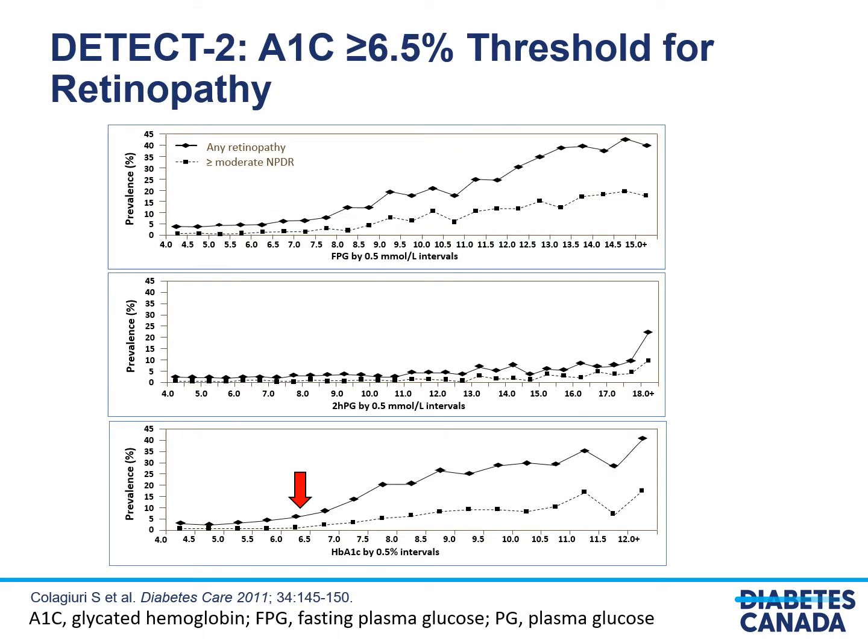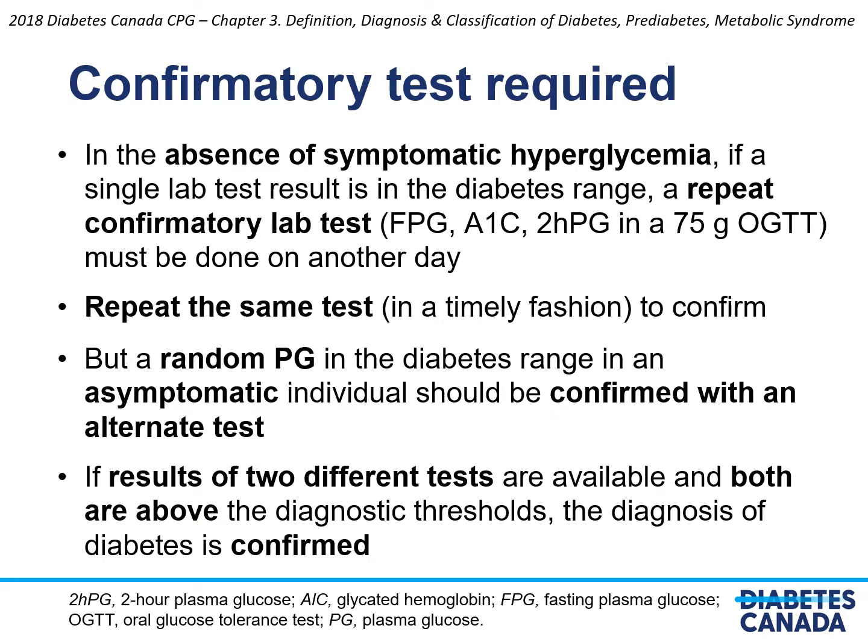The hemoglobin A1c criterion of 6.5 percent or more has been established more recently since the assay for hemoglobin A1c has been standardized across the world. Before committing an asymptomatic patient to a diagnosis of diabetes lifelong, it is important to confirm the diagnosis with repeat blood testing, generally with the same test that was used initially — fasting glucose, A1c, or 2-hour plasma glucose after 75 gram oral glucose tolerance test. The test should be done in a timely fashion on a separate day. However, if a random glucose level was the initial test, confirmation should be done with one of the other tests.